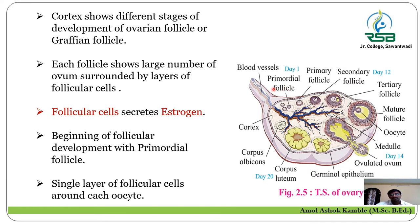The ovarian follicle develops into the primary follicle, then primary to secondary follicle, then tertiary follicle. The tertiary follicle develops into the mature follicle, also called the Graafian follicle. At the center of this Graafian follicle, there is presence of an oocyte, and that oocyte further releases the ovum during the menstrual cycle. Each follicle is surrounded by a number of follicular cells — around each follicle, from primordial to mature, there are layers of follicular cells present.